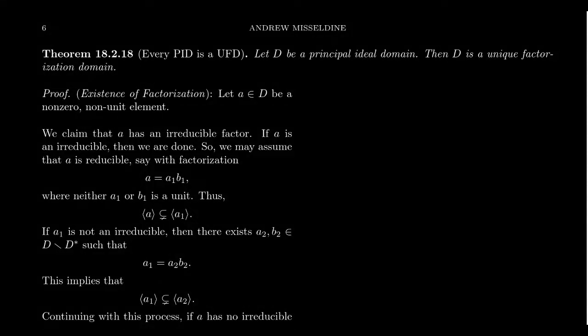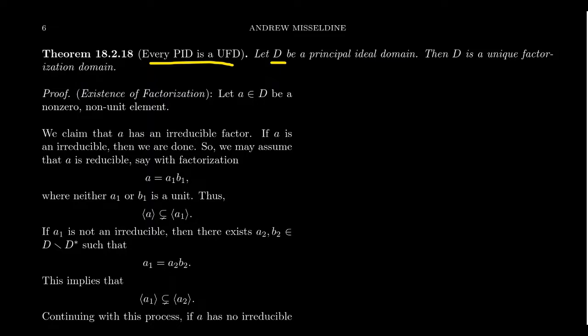We're going to prove the main result of Lecture 17: that every principal ideal domain is in fact a unique factorization domain. More particularly, if D is a principal ideal domain, then D is a unique factorization domain. It's a PID by assumption, and we have to prove it's a unique factorization domain. To be a UFD, the ring in question must first be an integral domain, but that's a non-issue for a PID since both definitions assume the ring is an integral domain.